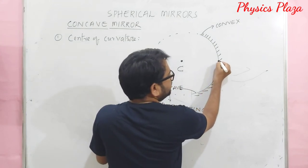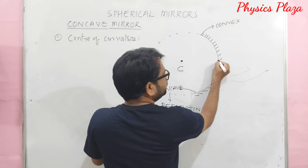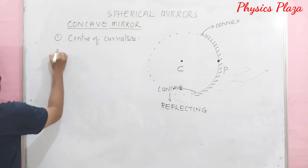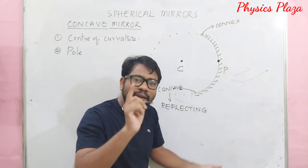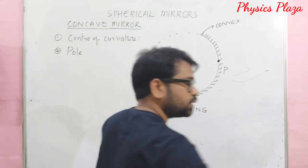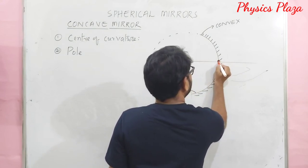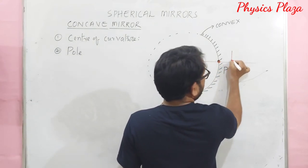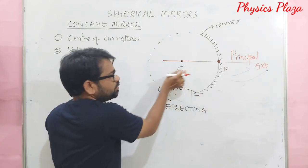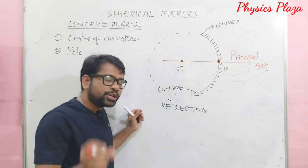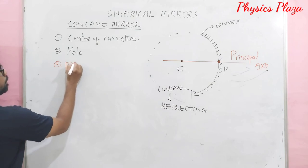The geometric center of the spherical mirror is called the pole. Whether the mirror is curved or plane, it has a geometric center — that is called the pole. The axis or line passing through the center of curvature and the pole is called the principal axis. These are the second and third important terms.